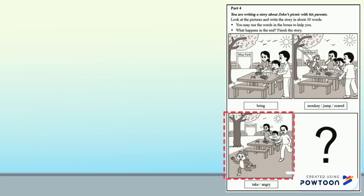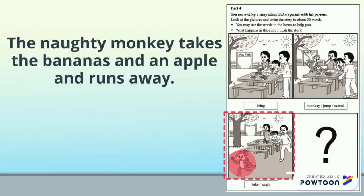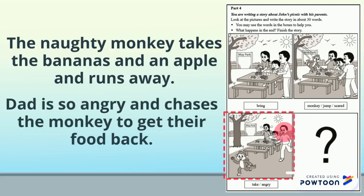Look at picture 3. What does the monkey do and then how do they feel? What does dad do? The naughty monkey takes the bananas and an apple and runs away. So, how does dad feel and what does he do? Dad is so angry and chases the monkey to get their food back.